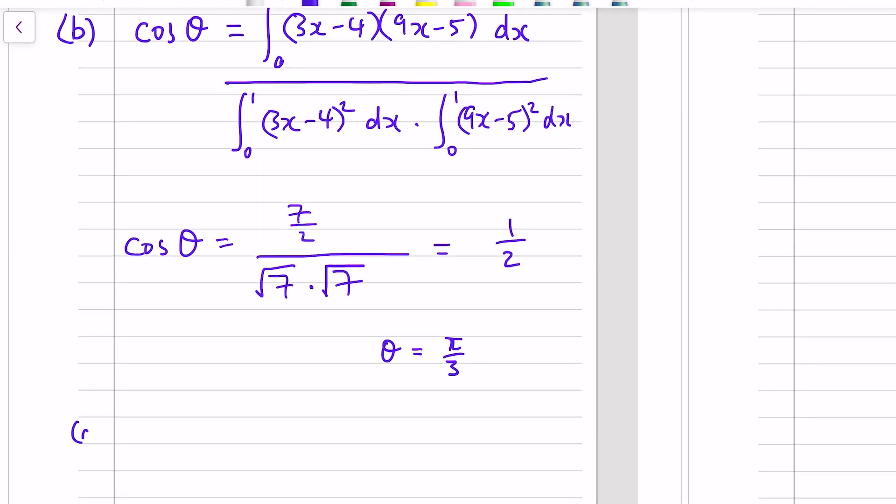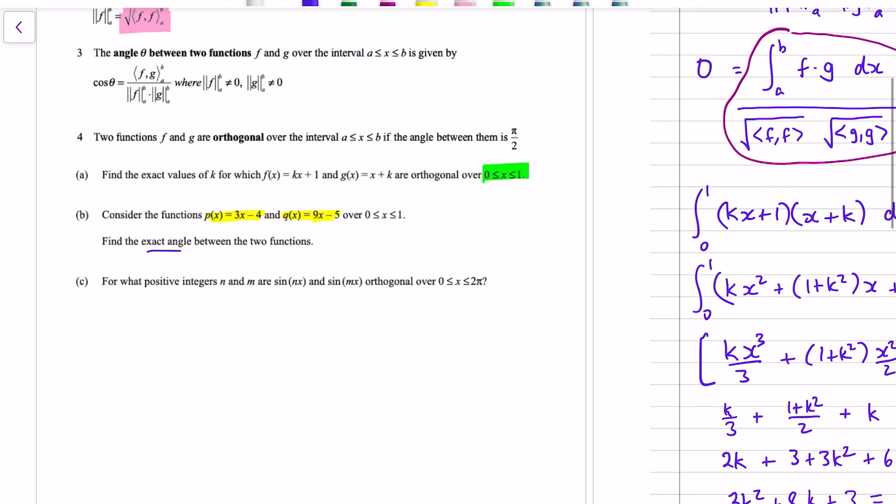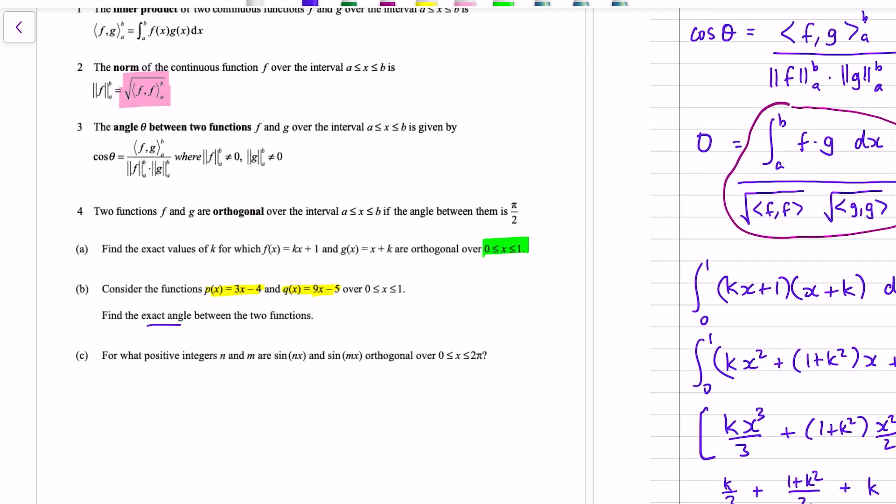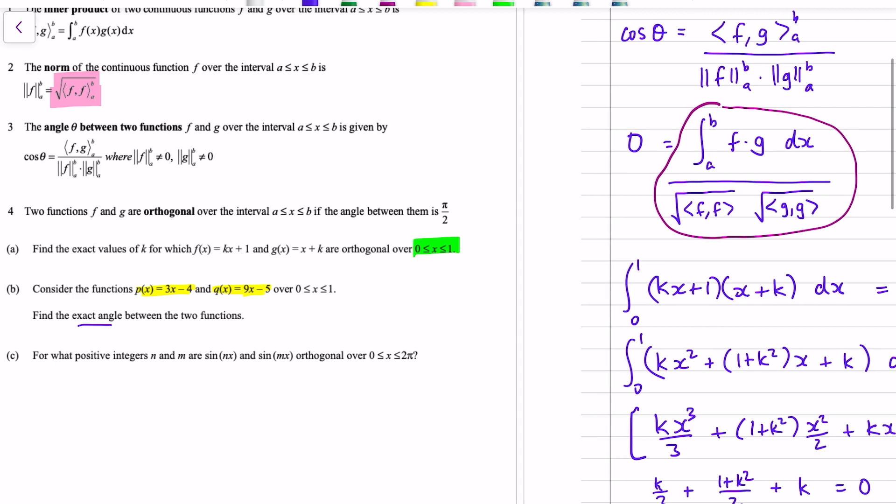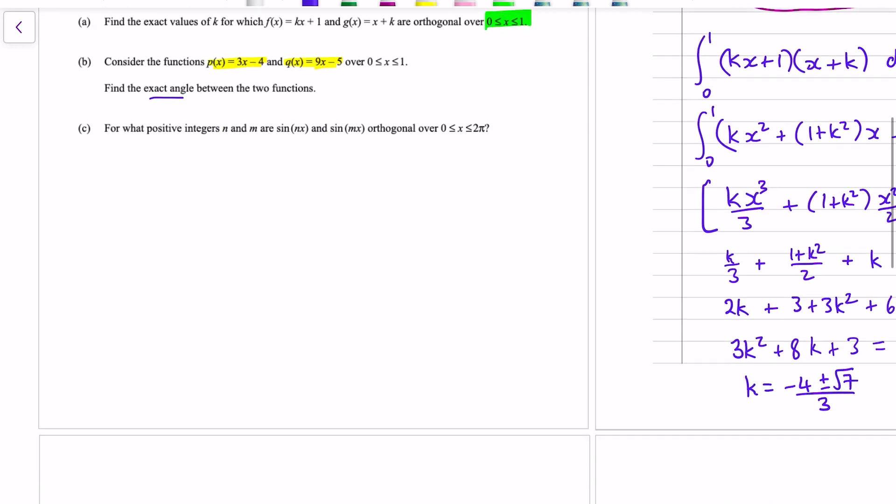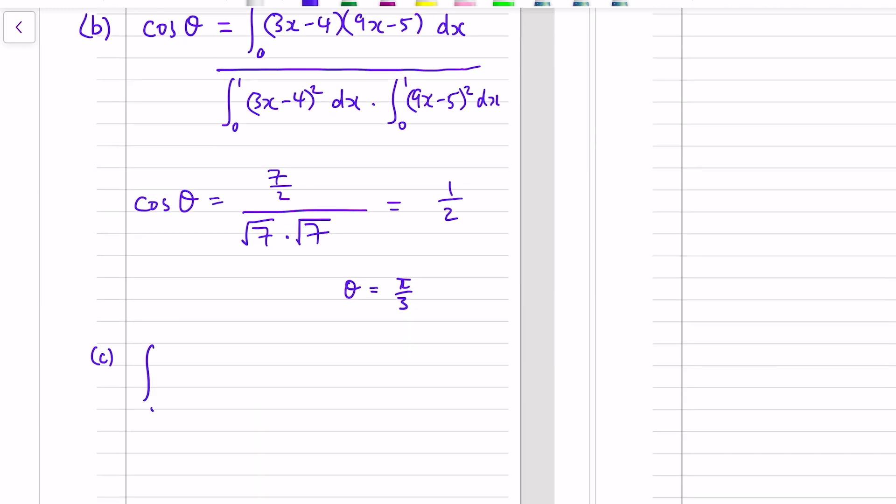It gives, of course, other solutions to the problem, but if we go back to this, the exact angle between two functions, I assume that they want us to give the acute angle. Alrighty, that's part B done. Part C. For what positive integers n and m are sine nx and sine mx orthogonal? So we're going back to a similar question of part A. Orthogonality meant that the cosine of pi over 2 equals 0.